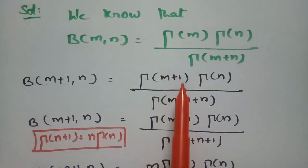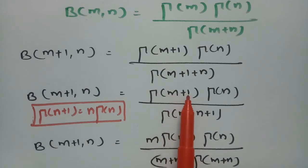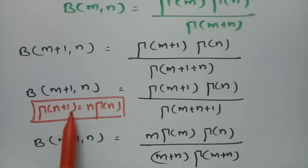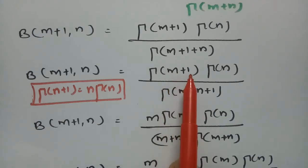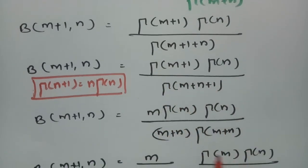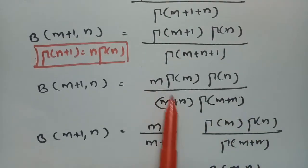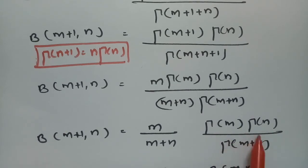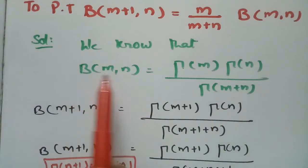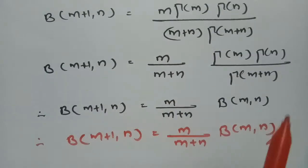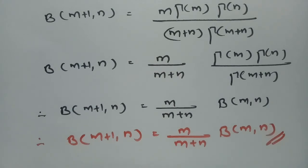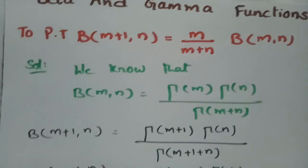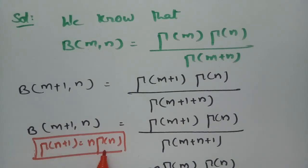Wherever we find m, we write m plus 1. So the numerator becomes gamma of m plus 1, and the denominator becomes gamma of m plus n plus 1. Using the property gamma of n plus 1 equals n gamma n, we write gamma of m plus 1 as m times gamma m, and gamma of m plus n plus 1 as m plus n times gamma of m plus n. Taking m by m plus n aside, what remains is gamma m times gamma n by gamma of m plus n, which is beta of m comma n. So this is how we prove the result using the important relation between beta and gamma functions and the property gamma of n plus 1 equals n gamma n.